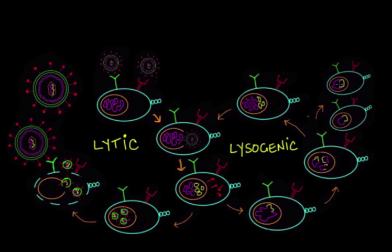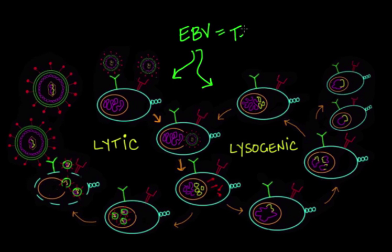Now EBV is a temperate virus. This basically means that it alternates its reproduction between both the lytic and lysogenic cycles. This is why EBV can stay dormant in the vast majority of people, occasionally flaring up due to environmental or physical changes to the host.